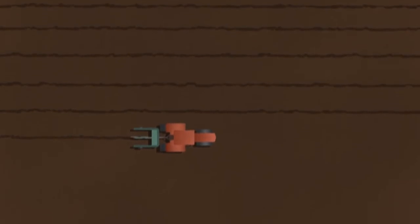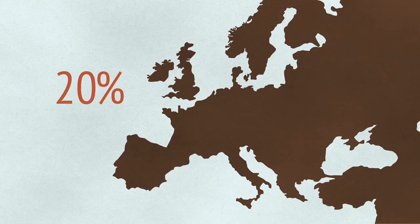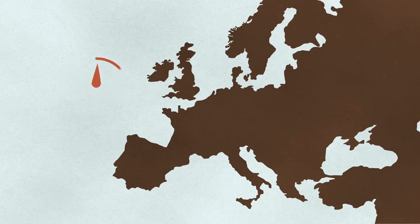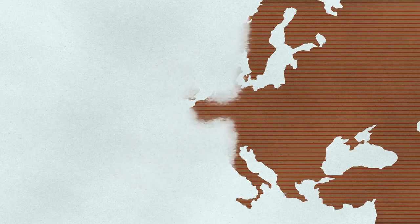Traditionally, farmers would plough their fields in a bid to control weeds, but with 20% of Europe's total land area estimated to be affected by water and wind erosion, natural soil formation is a very slow process. Repeated ploughing of topsoil exposes it to erosion and accelerates its degradation processes.